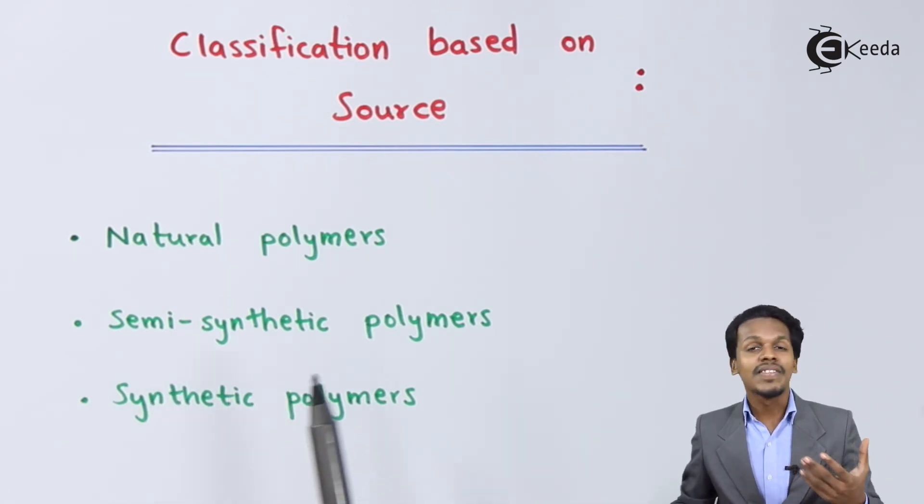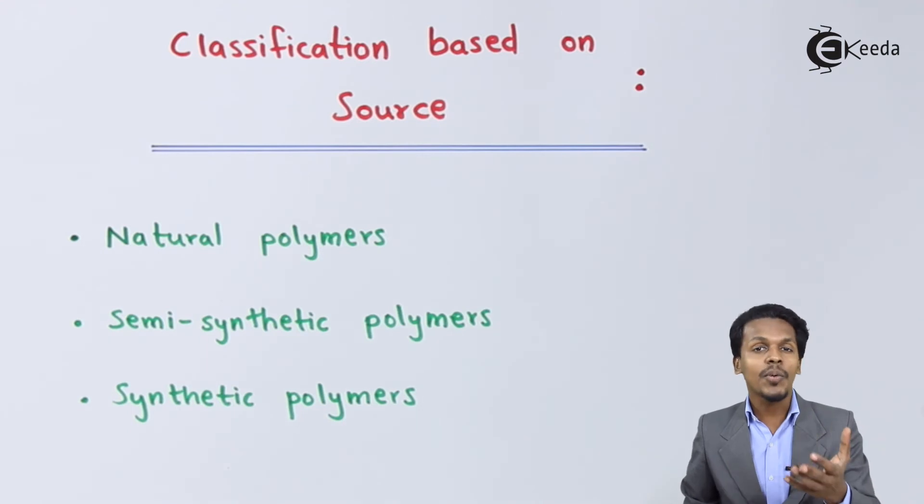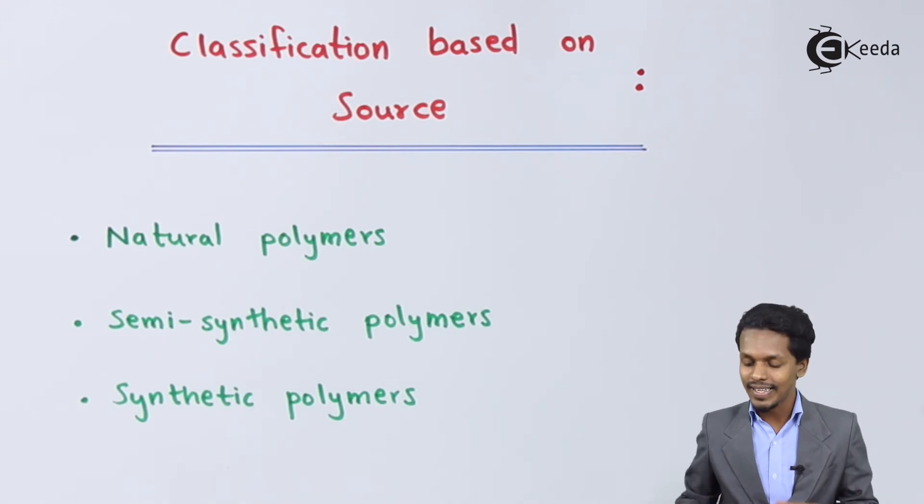For example, viscose rayon or cupramanium silk - they are obtained from nature but we are modifying them. So once we modify them, those polymers are known as semi-synthetic polymers. Now the last point...